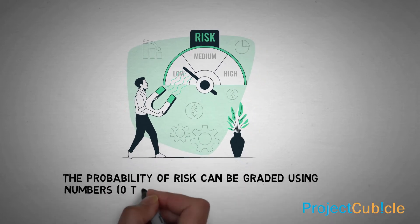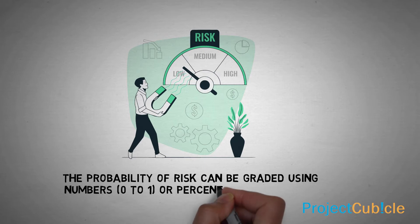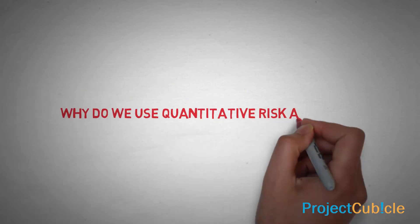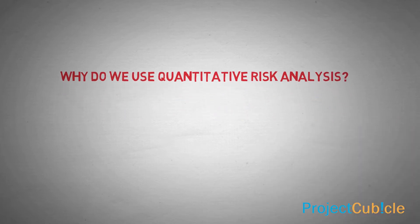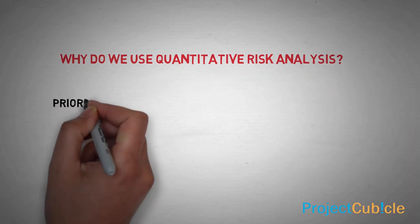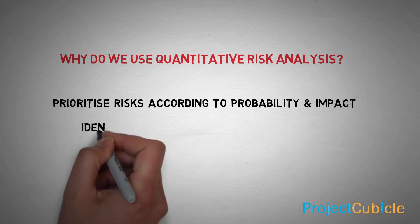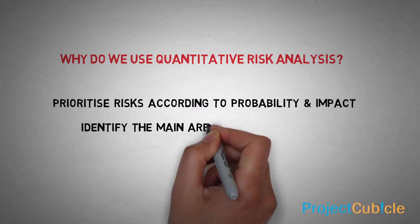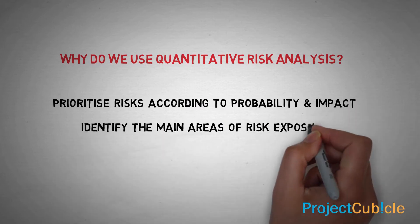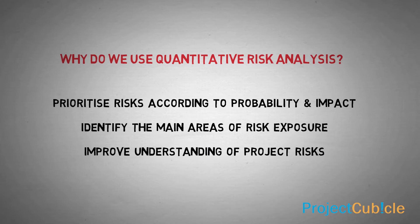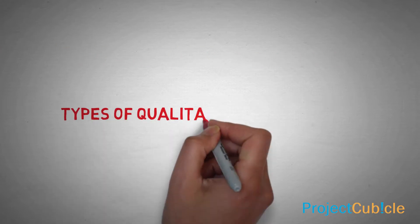The probability of risk can be graded using numbers zero to one, or percentages from 0% to 100%. We use qualitative risk analysis to prioritize risks according to probability and impact, identify the main areas of risk exposure, and improve understanding of project risks.